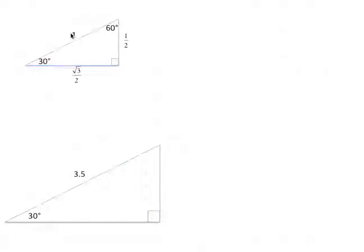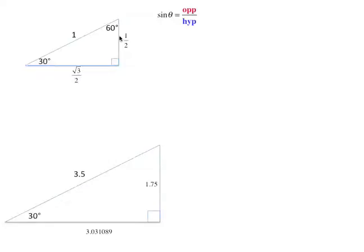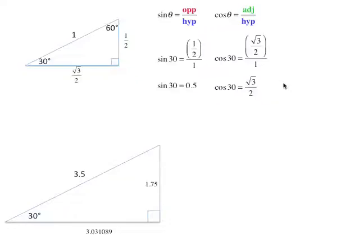I'm going to scale it up 3.5 times the size, multiplying all sides by 3.5. So one half times 3.5 gives 1.75, and 3.5 times √3/2 gives approximately 3.031089. Now, the sine of 30 degrees is the opposite over the hypotenuse — one half over one — which is 0.5. The cosine of 30 degrees is the adjacent over the hypotenuse — √3/2 over 1 — which is approximately 0.866025, which is irrational.